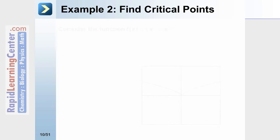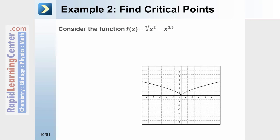Let's look at a second example to find critical points. Consider the function f(x) = the cube root of x², which can be rewritten as x to the two-thirds power. We're now going to find the derivative of this expression, which gives us two-thirds times x to the negative one-third power.